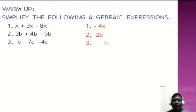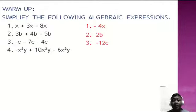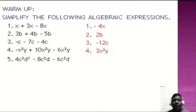Number four: negative x squared y plus 10x squared y minus 6x squared y. We can combine negative x squared y and negative 6x squared y since they are both negative, so we have negative 7x squared y plus 10x squared y, which is simply equal to 3x squared y.